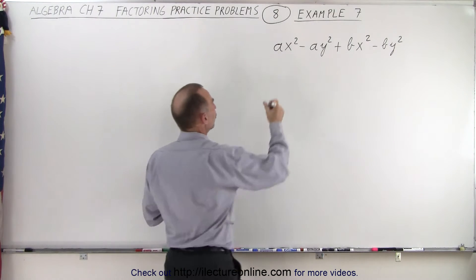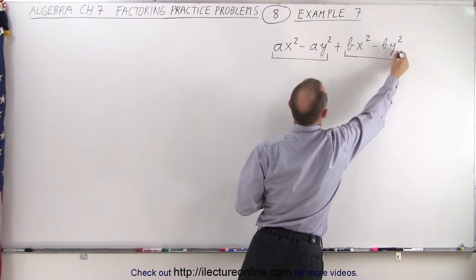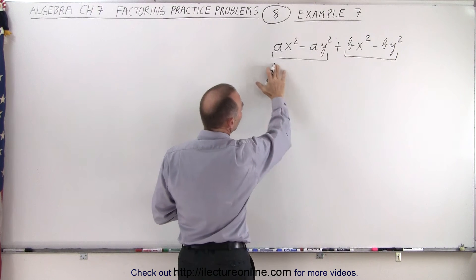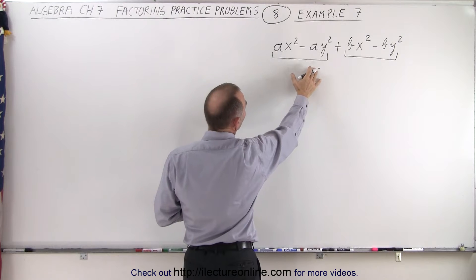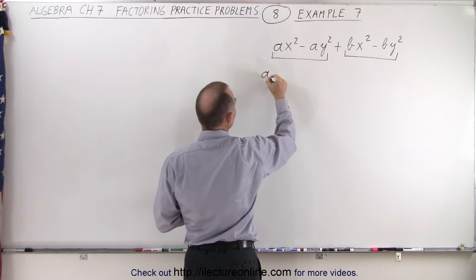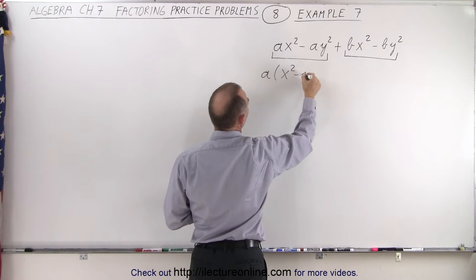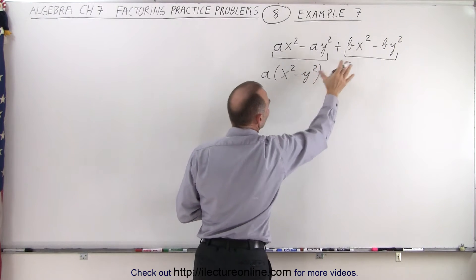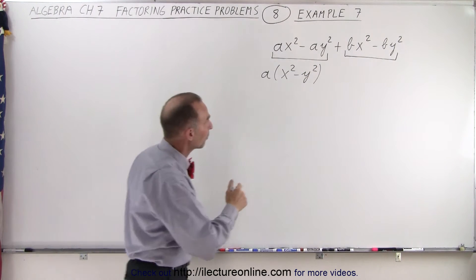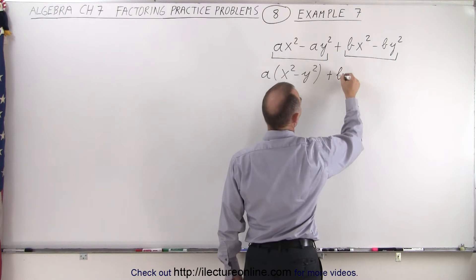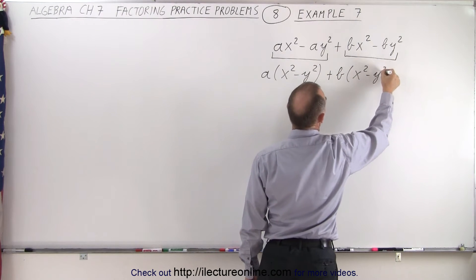Let's group the first two terms together and the last two terms together. If we do that, notice on the first two terms, what's common is A, so we can factor out an A. We end up with A times x squared minus y squared. And on the second group of two, we can factor out a B, so that would be plus B times x squared minus y squared.